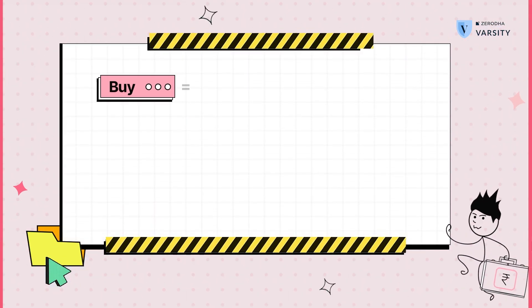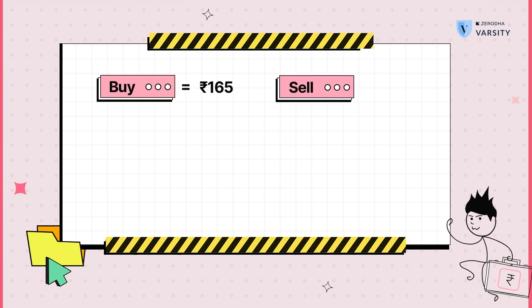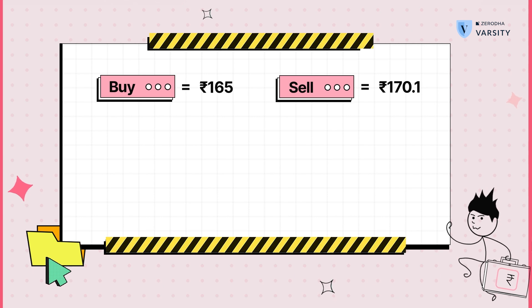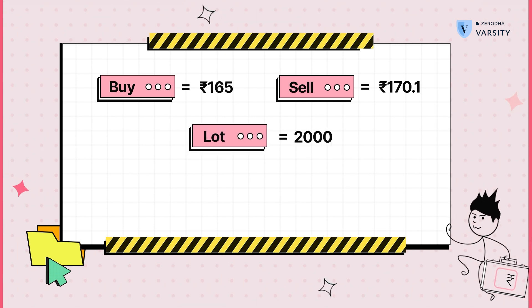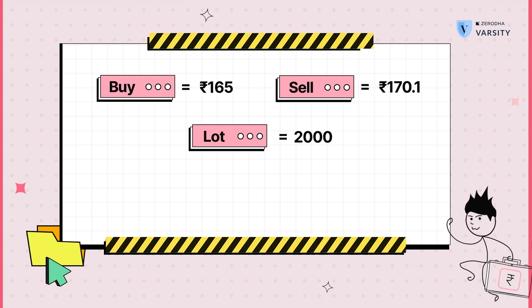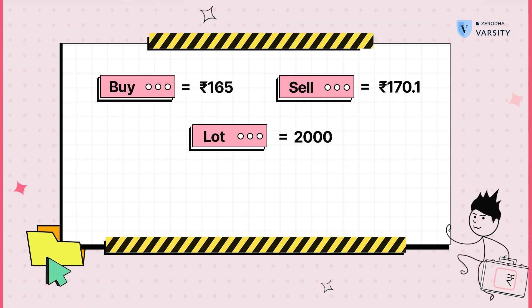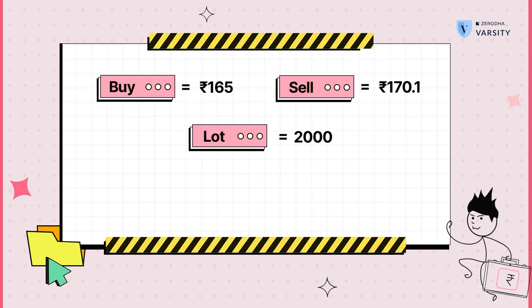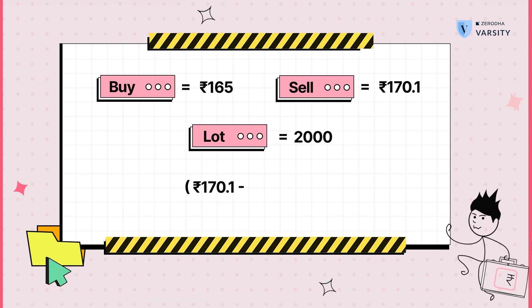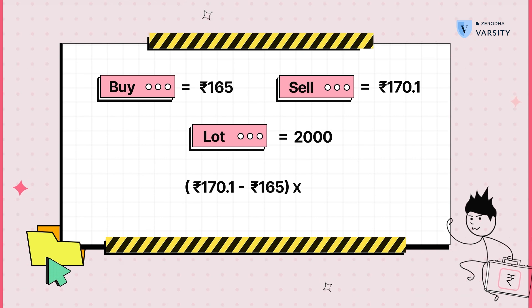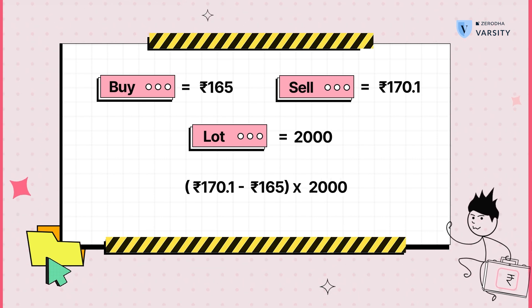Suppose we buy at 165 and sell at 170.1, and the lot size is 2000 shares. To calculate profit: 170.1 minus 165 multiplied by 2000 gives a profit of 10,200 rupees. This is straightforward because we have an entry price, an exit price, and we multiply by the lot size to get a profit or loss. But when the same transaction is done as an overnight position, the mechanism changes a little bit.